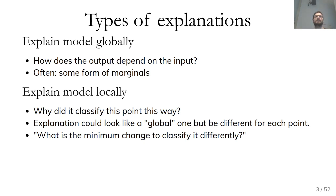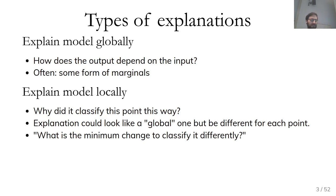The difference might be that if you do a credit scoring model, a global explanation would be like, if you have a longer credit history, then you get a better credit score. But a local explanation would be, why does this particular person have this particular credit score? If things are about people, you often want to be able to explain why a particular decision was made. Some researchers say making real-world decisions based on black box models is a bad thing, but at least it would be good to have an idea of why a decision was made.